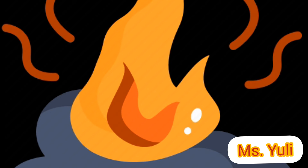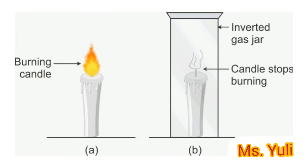Proof that we need air to burn can be seen from this experiment. Burn two candles and then cover one of them with a glass or an inverted jar. The candle which is covered with the glass will stop burning. This means burning needs air, or oxygen.